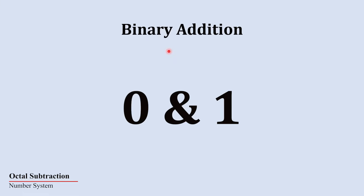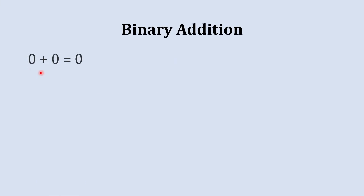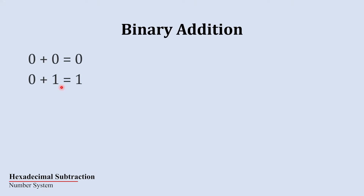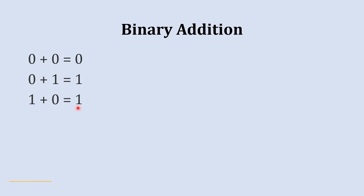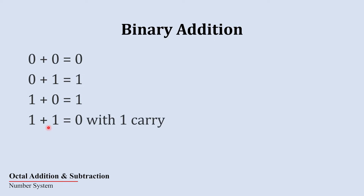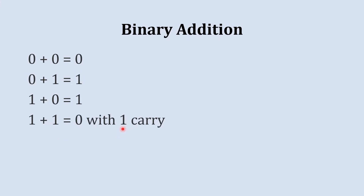When we have two binary digits, the results are: 0 plus 0 gives 0, 0 plus 1 gives 1, 1 plus 0 gives 1, and 1 plus 1 gives a sum of 0 with a carry of 1 to the next column.